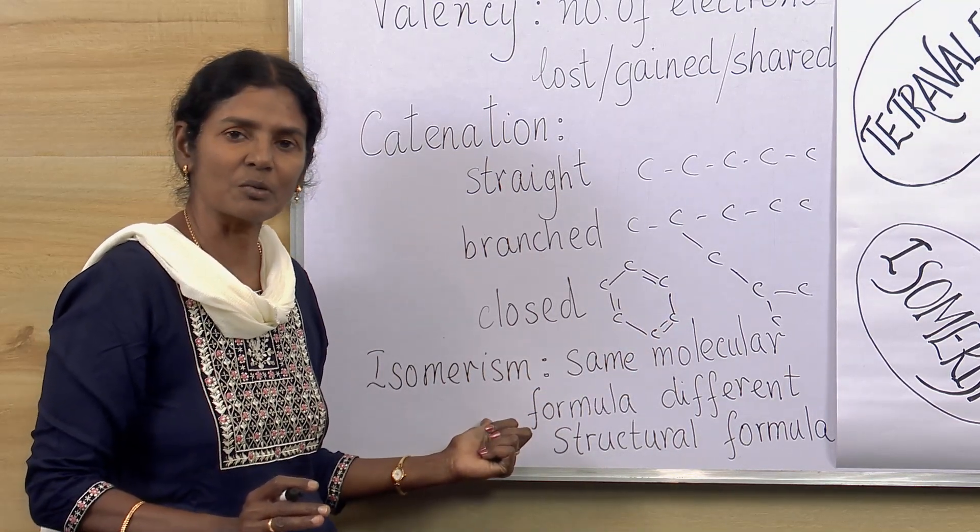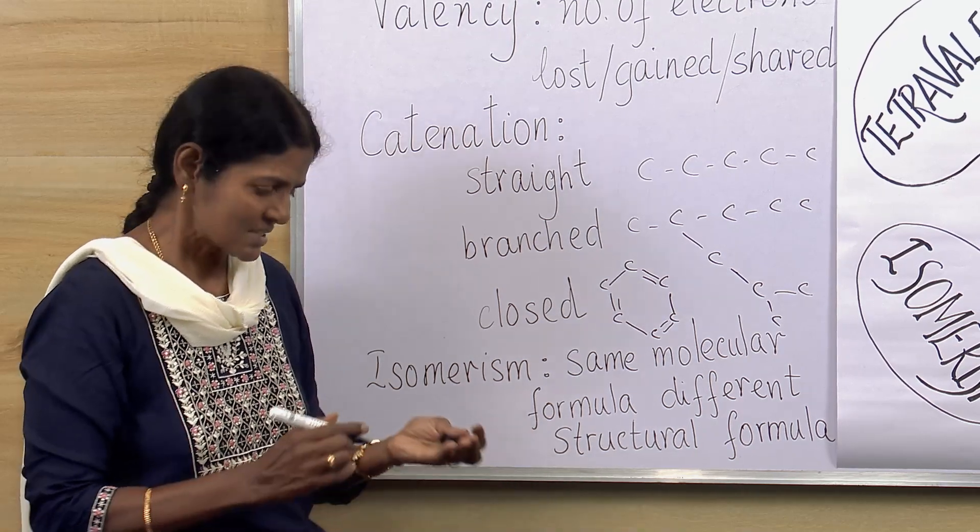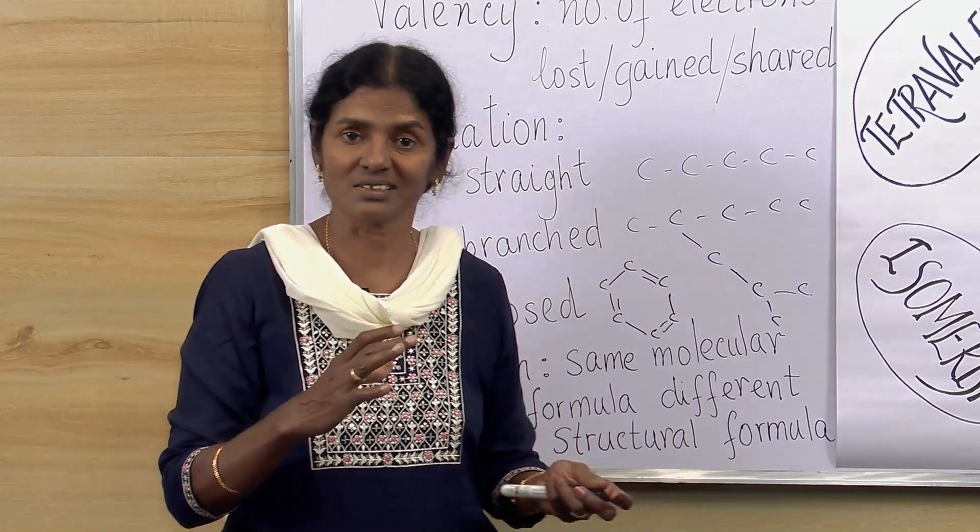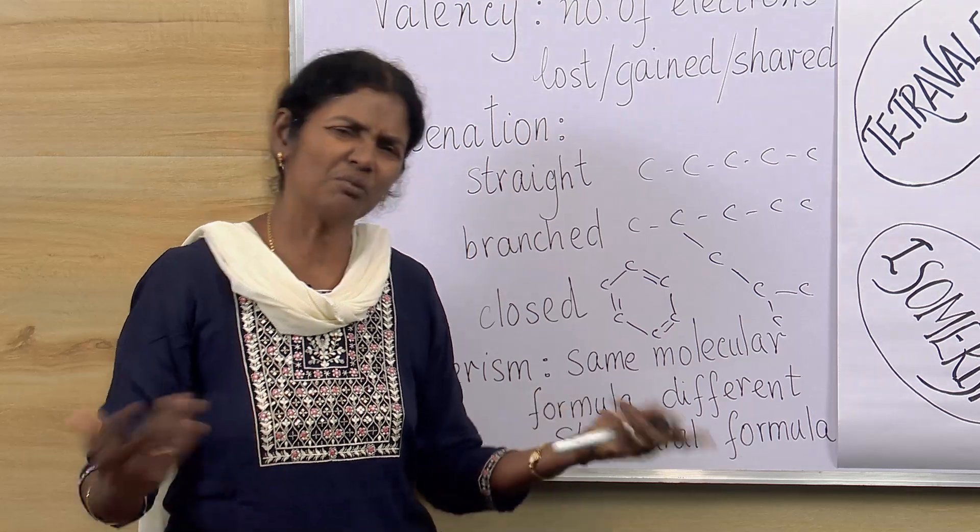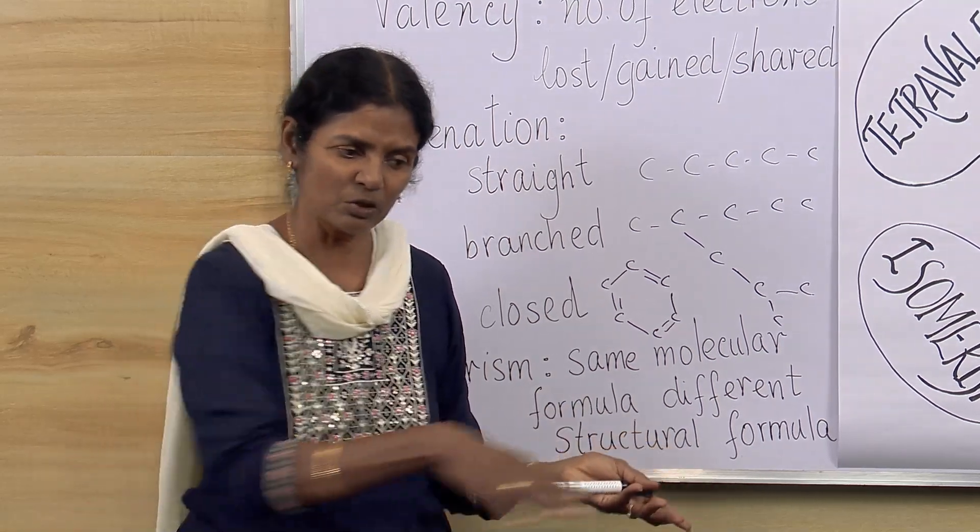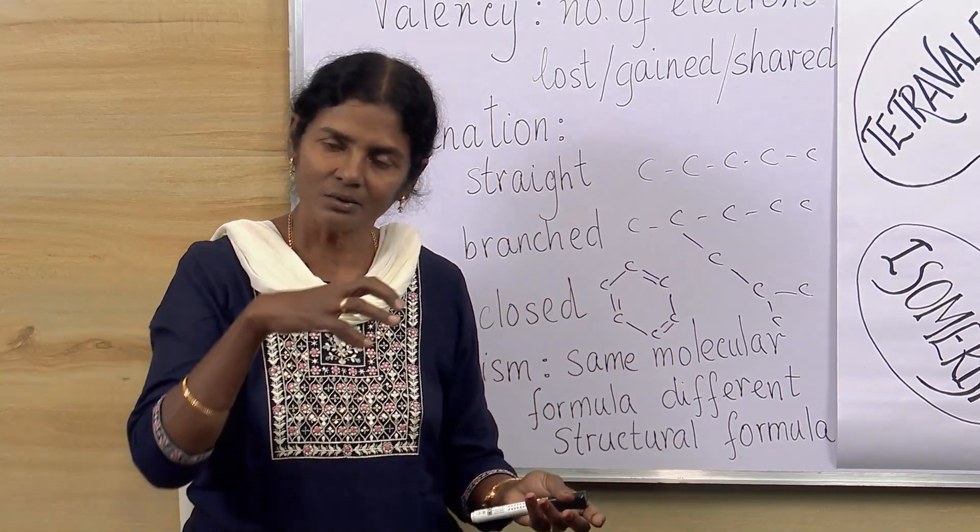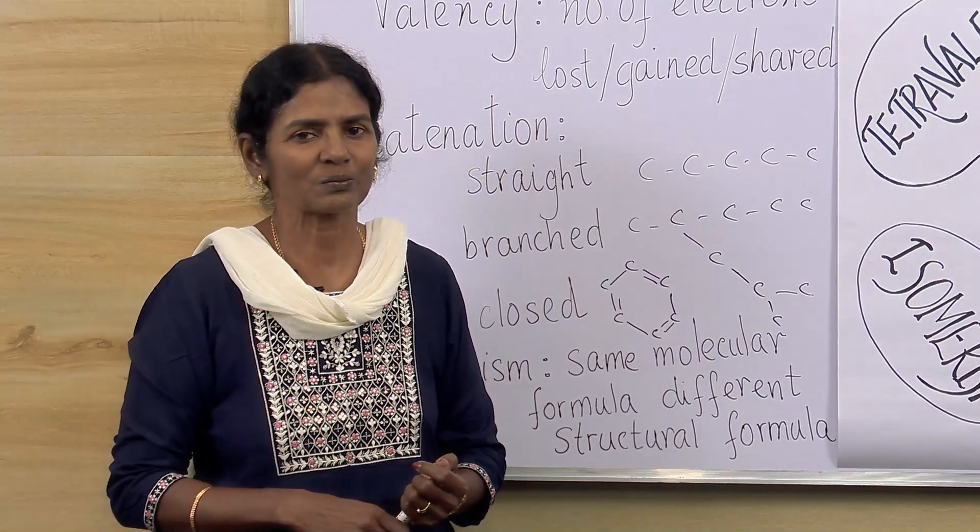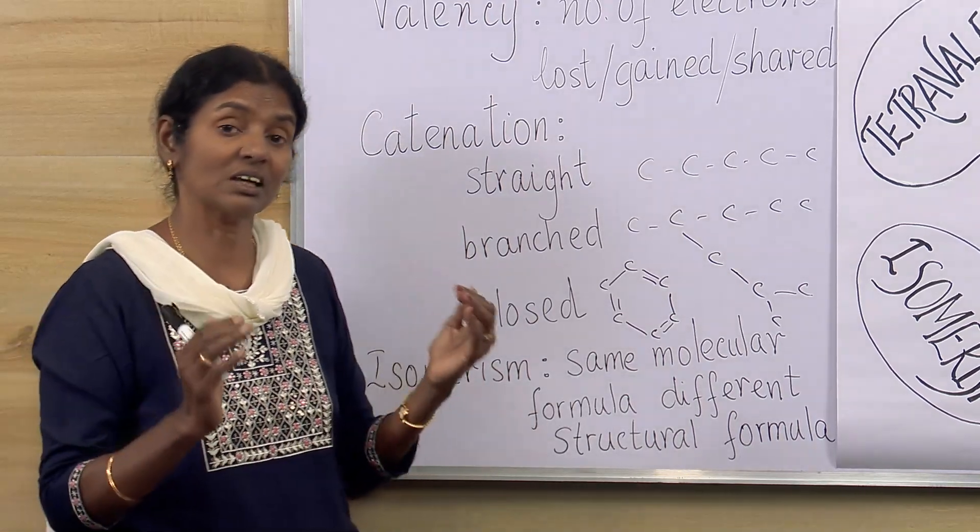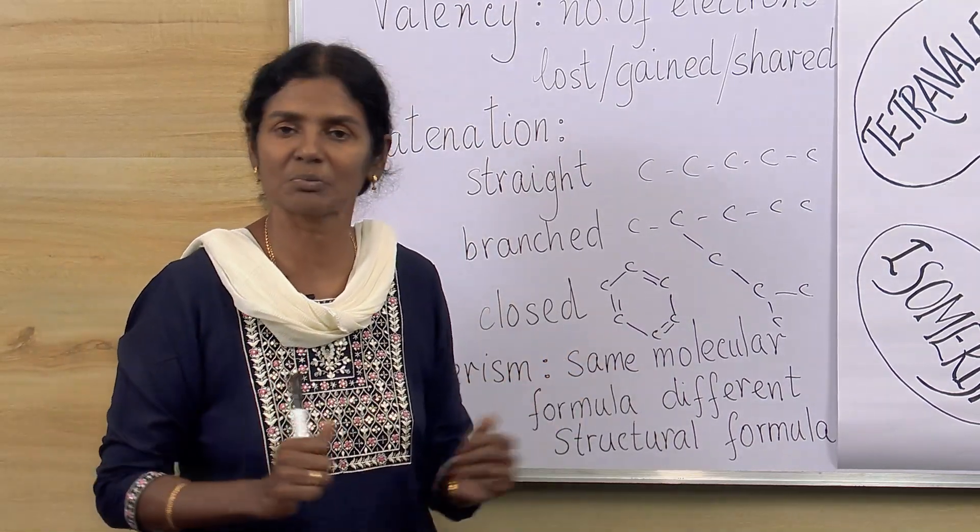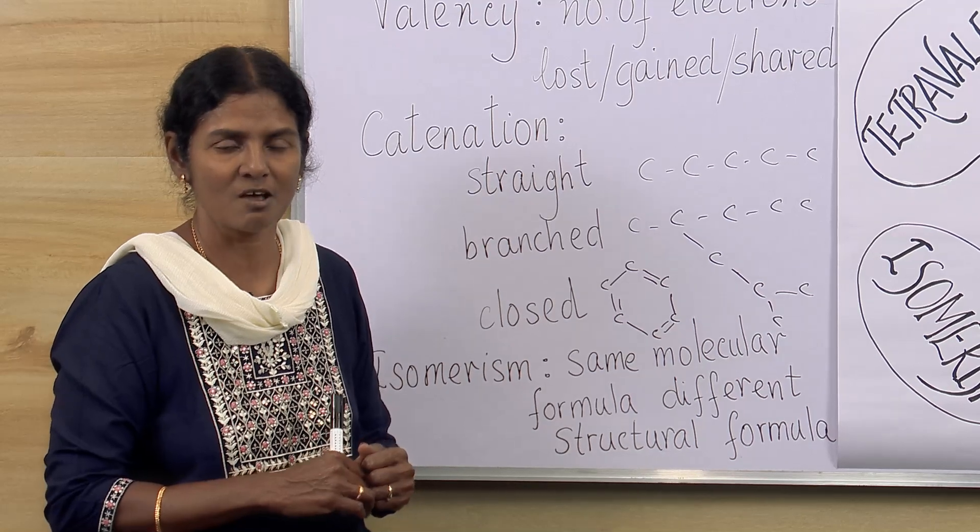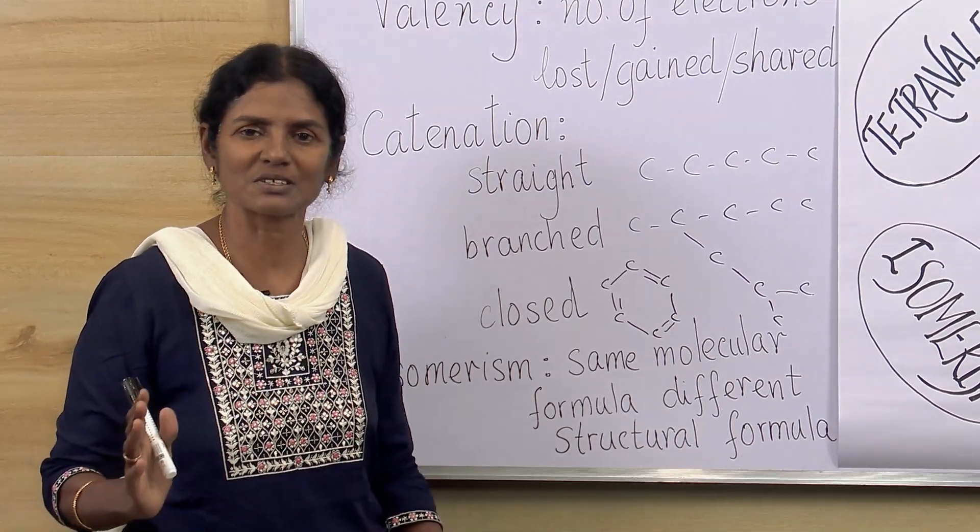Next unique property is isomerism. When you have a dance of say 10 people, how many formations can you make? Maybe you would have a straight line, you would have a semicircle or you would have a circle. Only that much maximum we can do. But when you have say 100 or 1000 people in a performance, different kinds of formations are possible.